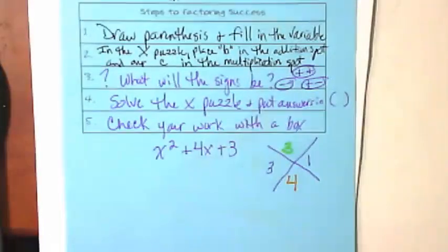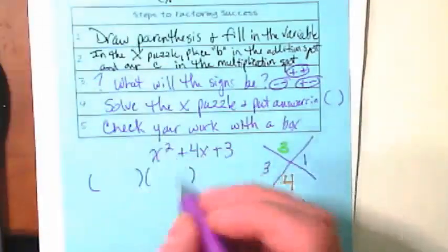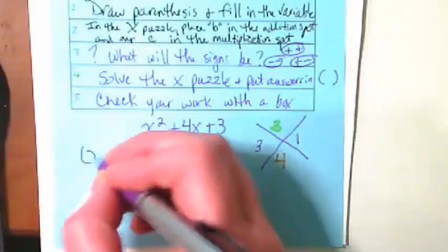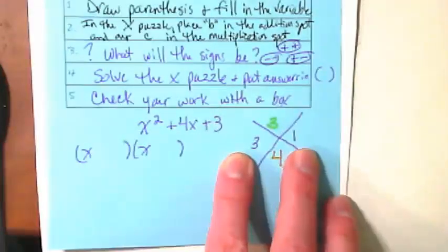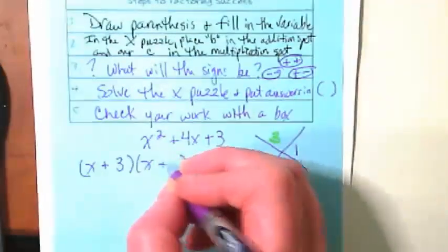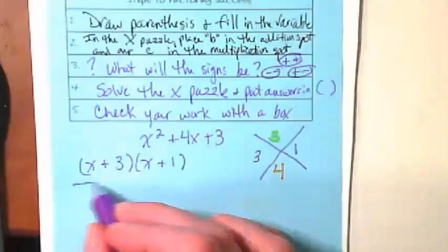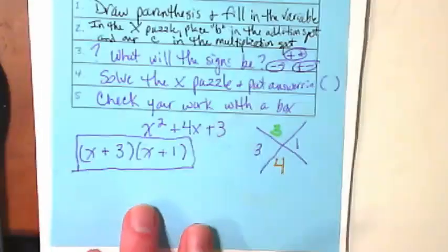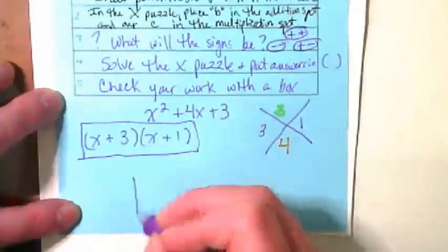And I jumped ahead. I did not draw my parentheses. So my first step should have been to draw the parentheses. My second step should have been putting these in after filling in the variable. Are these going to both be positive or negative or one of each? They're going to both be positive, and we're going to fill in our answers. And this would be the solution of what we're looking for.